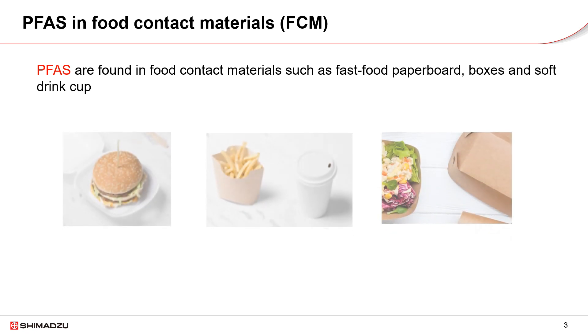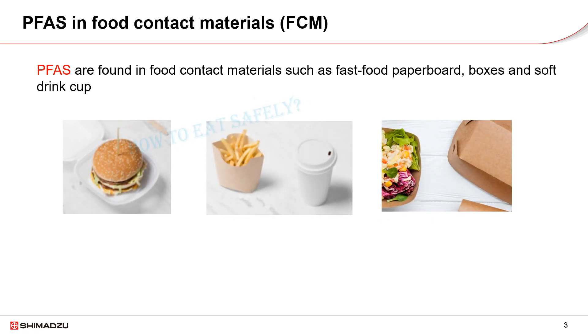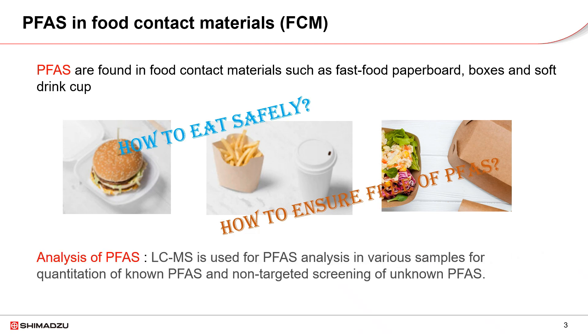PFAS are found in food contact materials like paperboard, boxes and soft drink boxes used in fast food restaurants. Analysis of PFAS on the surface of these food contact materials is required. LC-MS is one of the methods because of high sensitivity and selectivity.